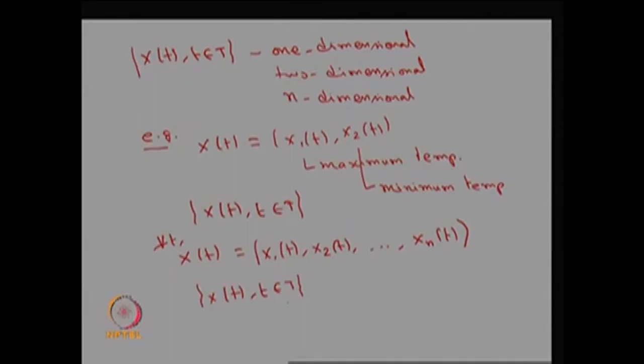You can go for a one-dimensional random variable to form a one-dimensional stochastic process, or you can have a two-dimensional or n-dimensional stochastic process. In this course, what we are going to discuss will always be a one-dimensional stochastic process.